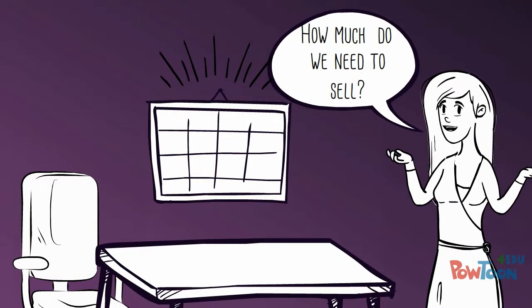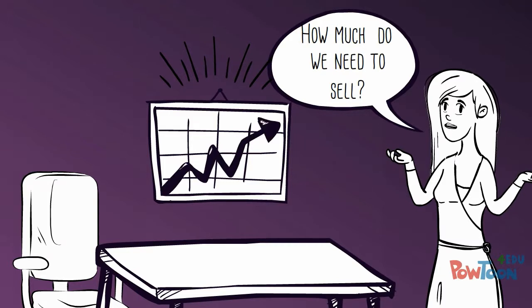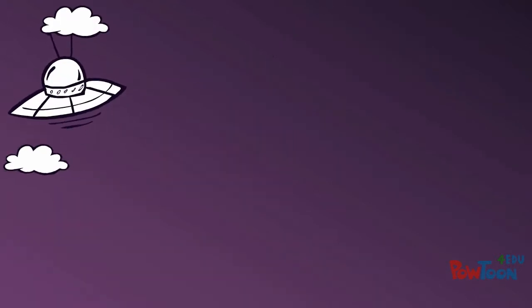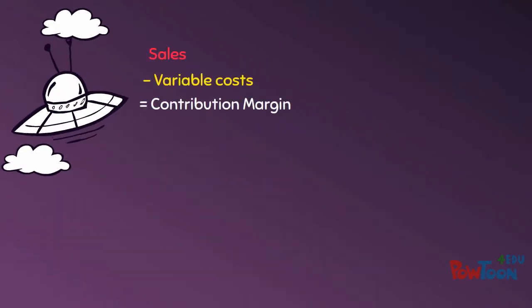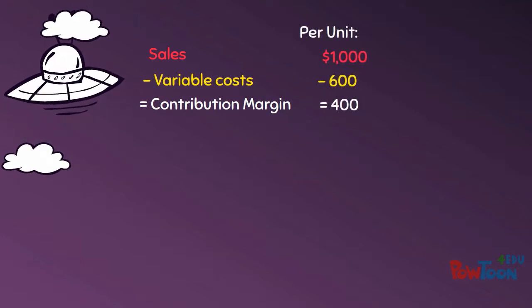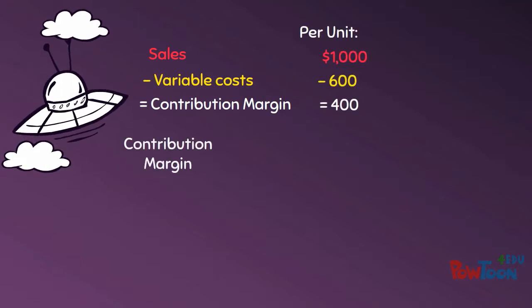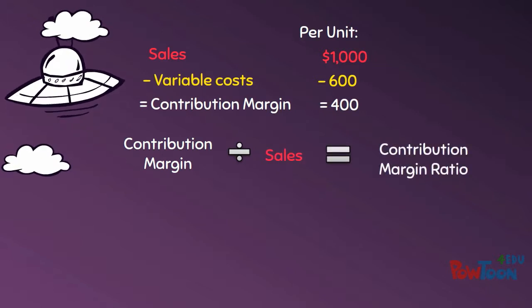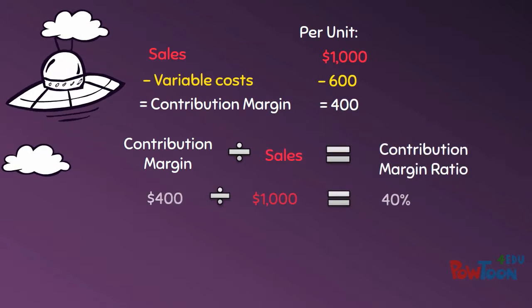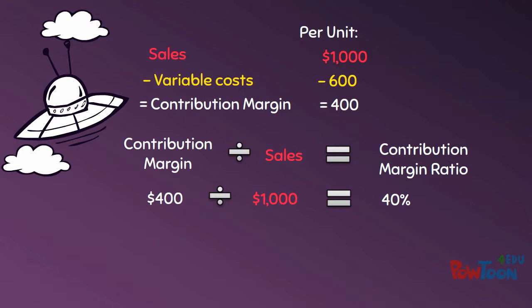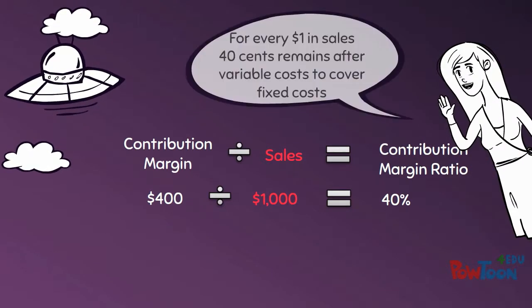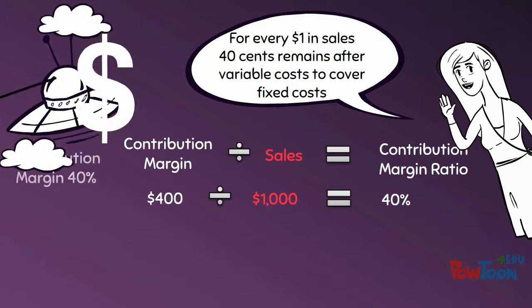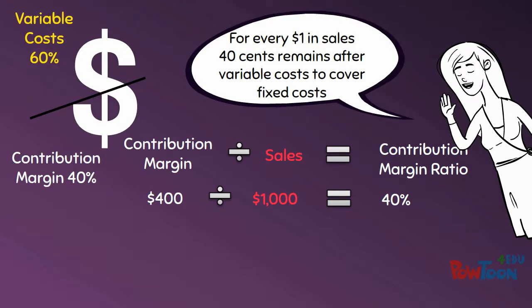But what if we want to find our contribution margin in terms of dollar sales? If we go back to our contribution margin, we can take our contribution margin and divide it by our sales price to get our contribution margin ratio. The contribution margin ratio is 40% for our spaceships. This means that for each $1 in sales, $0.40 is left over after variable costs to cover our fixed costs.